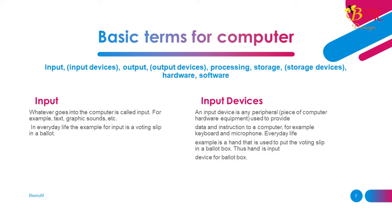In everyday life, an example of input is a voting slip in a ballot. An input device is any peripheral piece of computer hardware equipment used to provide data and instructions to a computer — for example, a keyboard and microphone. An everyday life example is a hand used to put a voting slip in a ballot box; the hand is the input device for the ballot box.